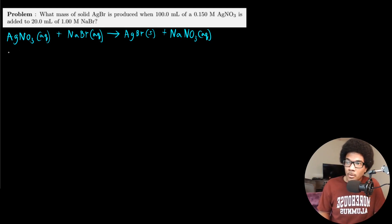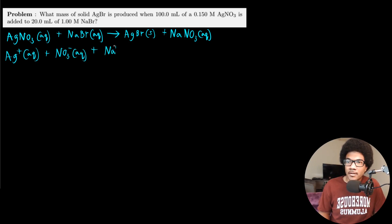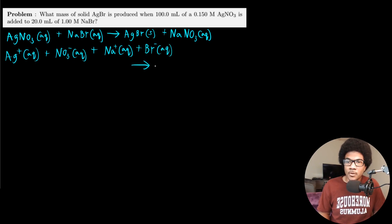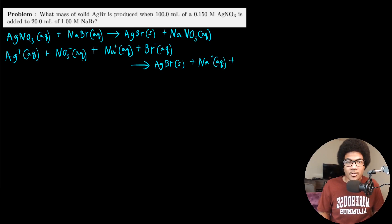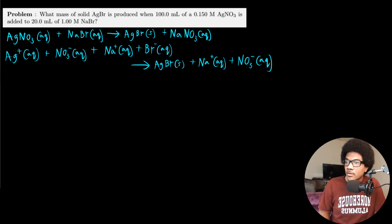If we write out all of our different ions, the complete ionic equation would be: silver cation plus a nitrate anion plus a sodium cation plus a bromide anion — giving you solid silver bromide plus aqueous sodium ions and aqueous nitrate anions. Can you spot the spectators?